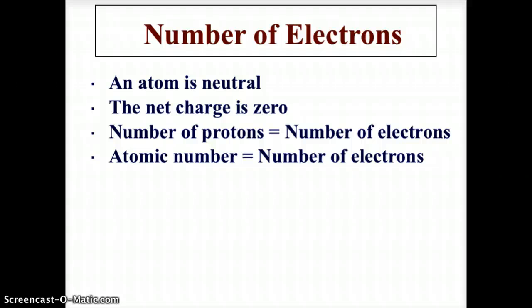Now later we will discuss ions which are charged atoms, atoms that have a positive or negative charge, and in that case you would not have an equal number of protons and electrons, and we'll go over that in another video.